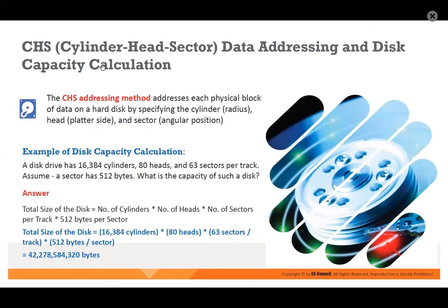Let us understand what CHS is — cylinder head sector — for data addressing and disk capacity calculation. When somebody says they have one terabyte, how do they calculate that size? Did you ever wonder how they calculate the capacity? Okay, so how do they calculate the disk capacity?